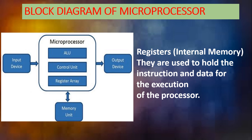The Register is nothing but internal memory. Registers are used to store all the instructions and data for the execution of the processor. We can store temporary calculations in the register — it is a small memory space inside the microprocessor. The data can be transferred from register to memory unit as well. The ALU uses registers to store the results of calculations.